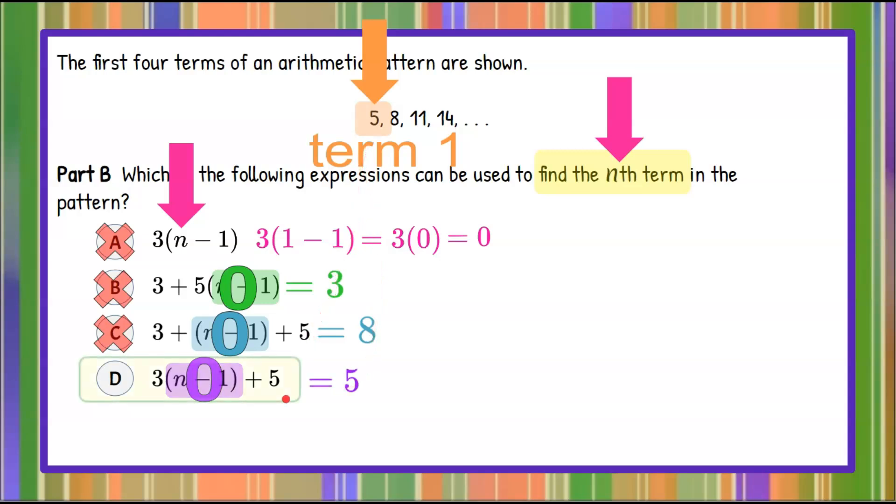So we know that this rule, 3 multiplied by the quantity n subtract 1 plus 5, is equal to the rule.